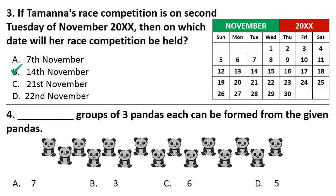Next Question. Groups of 3 pandas each can be formed from the given pandas. Answer is Option D. That is 5.